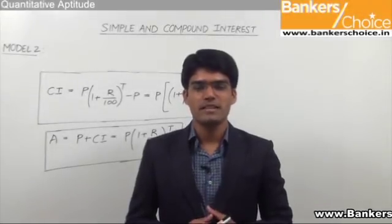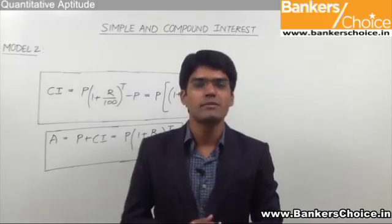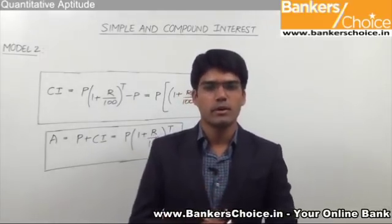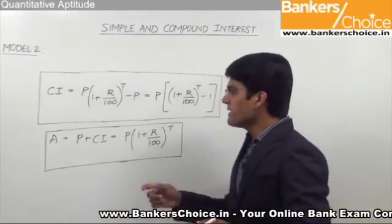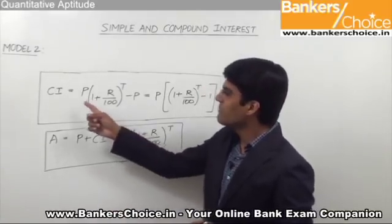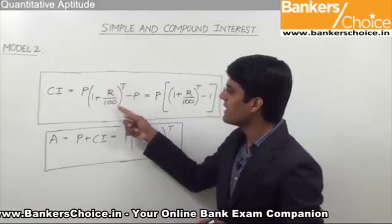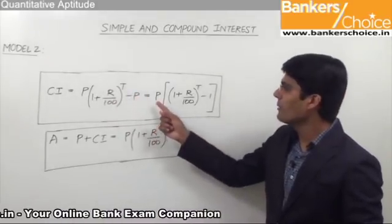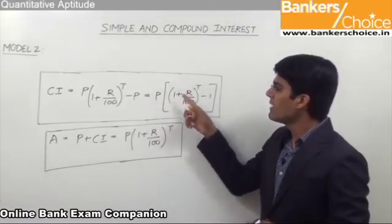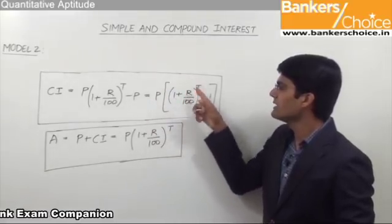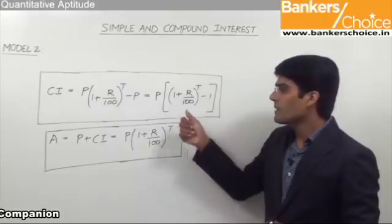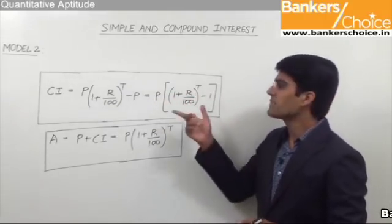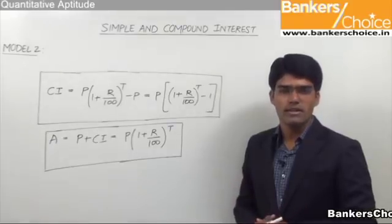Let us now take the second model from this topic where we are going to do calculations related to compound interest. Let us first have a look at the formula required. Compound interest can be taken as P into (1 + R/100)^T minus P, or taking P common: P[(1 + R/100)^T - 1], where P is the principal, R is the rate of interest, and T is the time period. Simply by substituting the values we get the required compound interest.